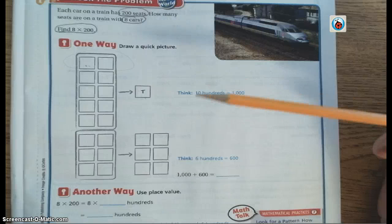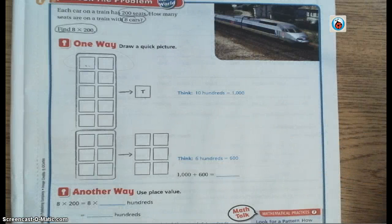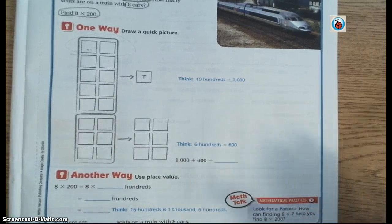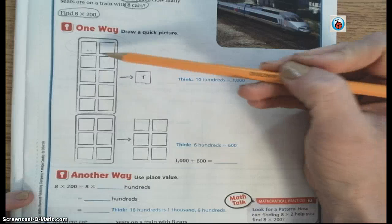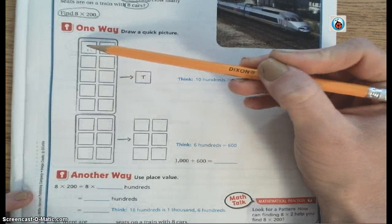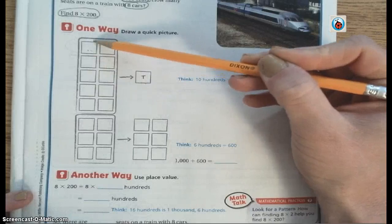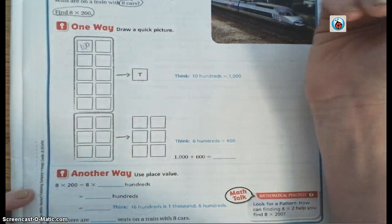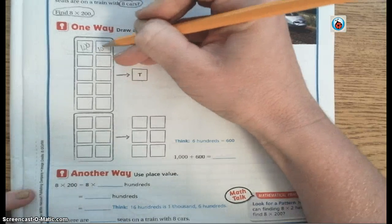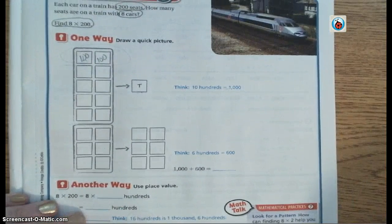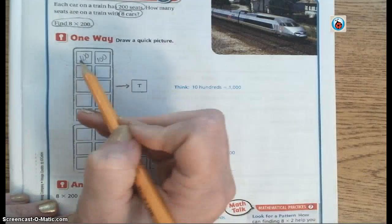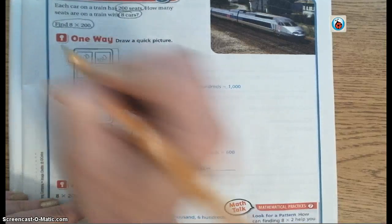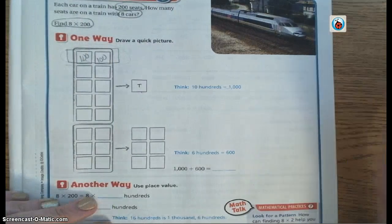The first way that I'm going to show you is to draw a quick picture. Go ahead and look down here where it says one way. We know that each one of these squares is worth 100. Each one of these squares is worth 100. So if each car has 200 seats, then for every two would be one car.